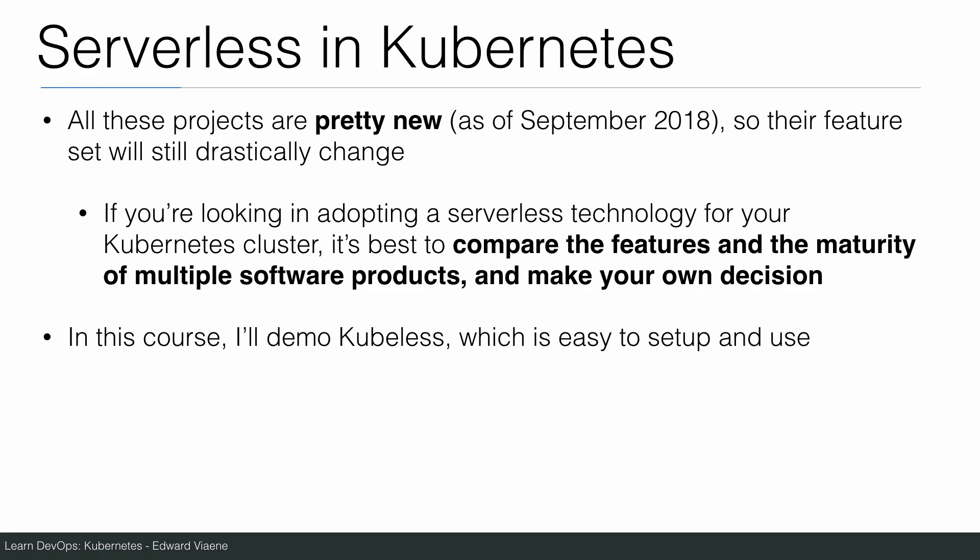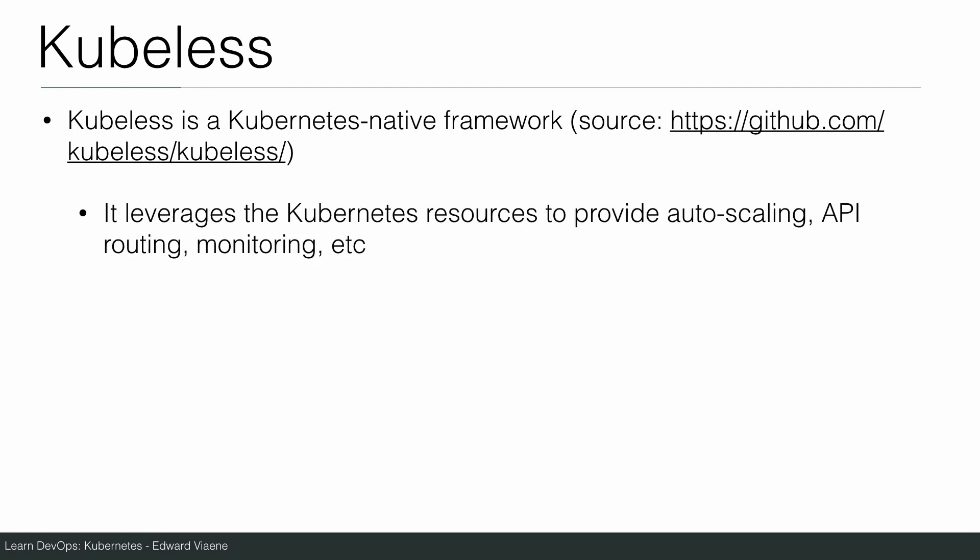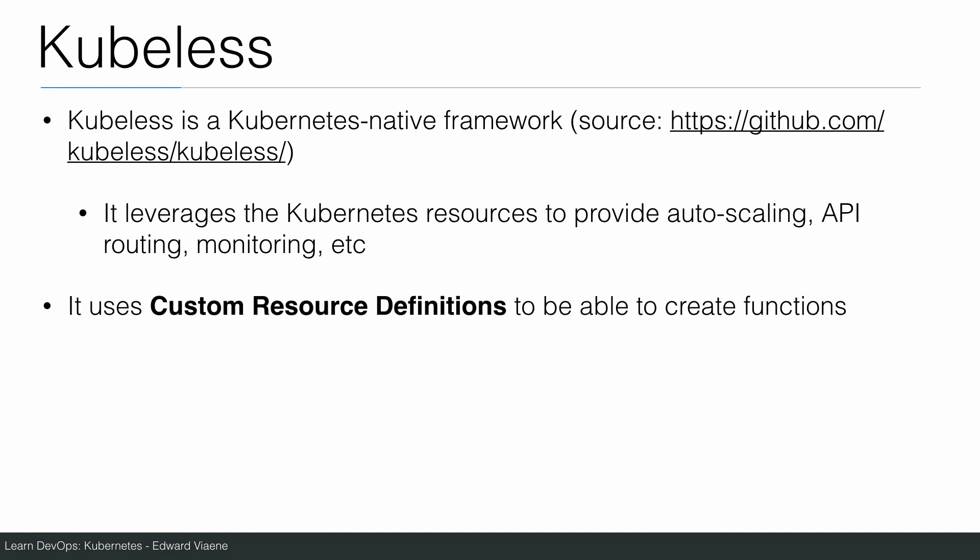I'm now going to talk about Kubeless. Kubeless is a Kubernetes-native framework. You can find it at github.com/kubeless/kubeless. It leverages Kubernetes resources to provide autoscaling, API routing, monitoring, and so on. It uses whatever is available in Kubernetes to provide this serverless framework, and it uses custom resource definitions to be able to create functions — extending the Kubernetes API with its own functionality.